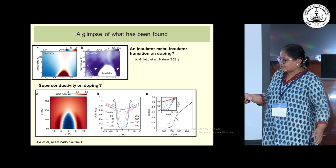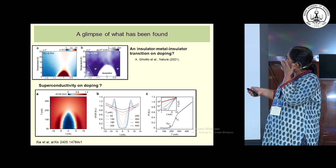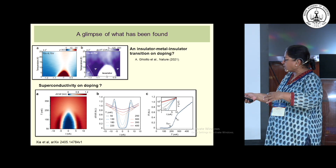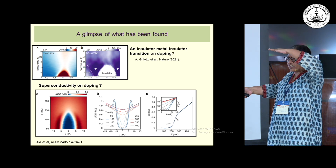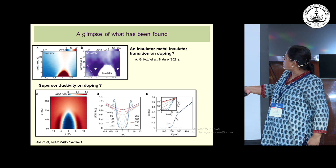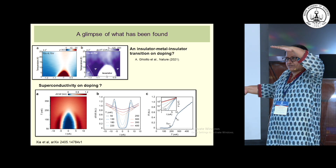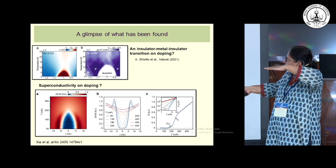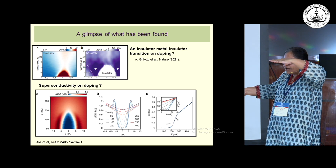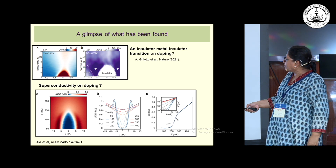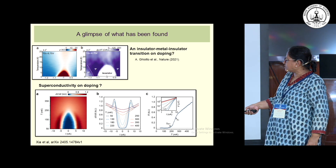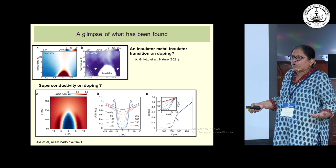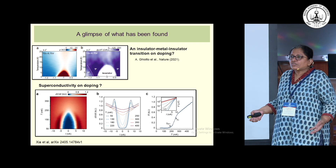To give you a glimpse of some experiments which have really driven the field — this material is a semiconductor, and if you move your Fermi level into the valence band, you're doping holes. Moving it into the valence band gives metallic behavior, and suddenly it becomes insulating again. At some angles, you also see superconductivity, recently observed by Ken Firemark's group at Cornell. The question is, why are these boring semiconductors showing all these exotic properties?